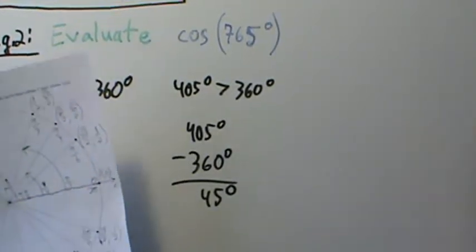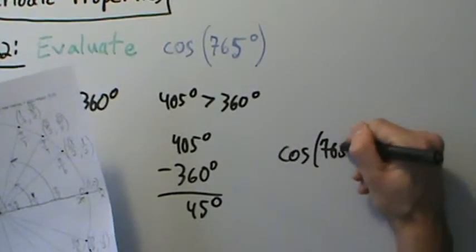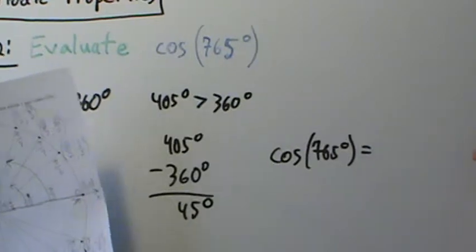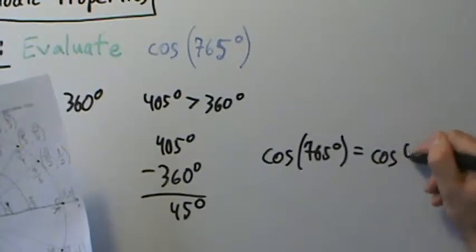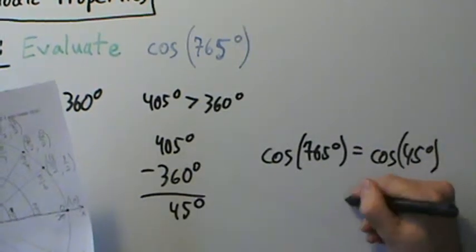So the cosine, so basically what we have now is the cosine of 765 degrees equals the cosine of 45 degrees. That's what these periodic properties tell us.